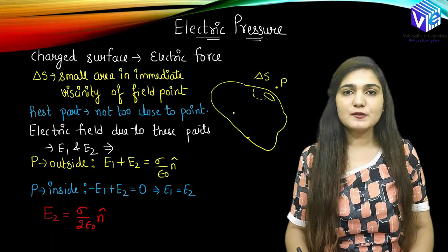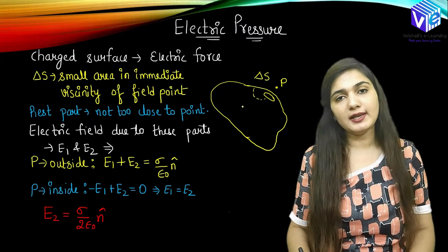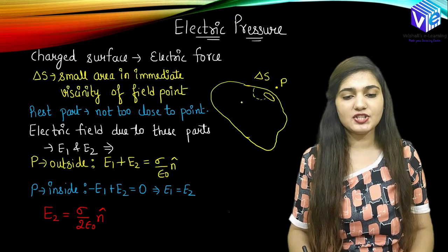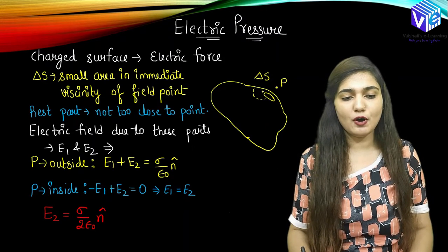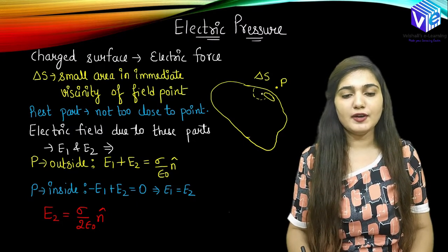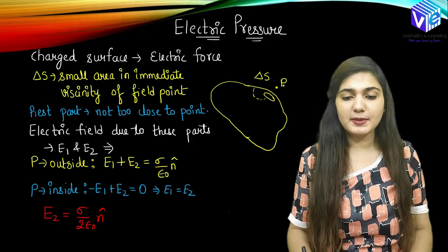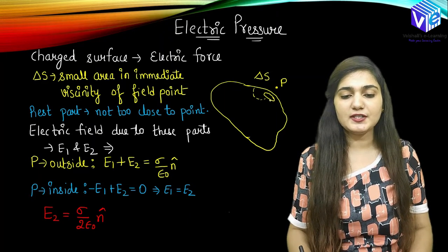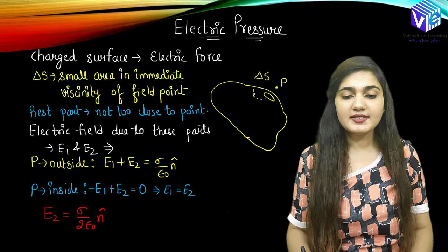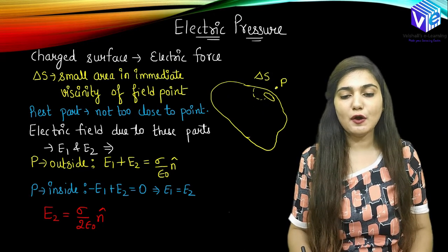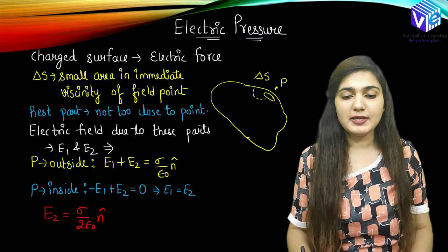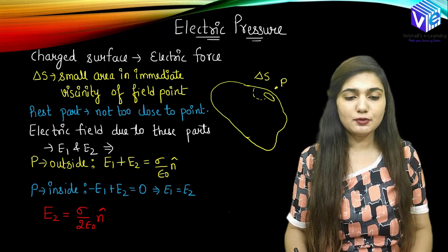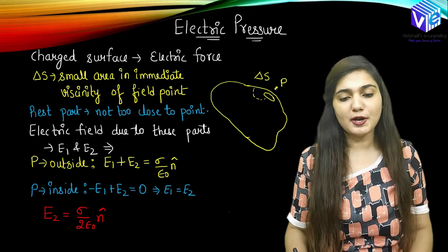We all know what pressure is — pressure is force per unit area. Similarly, we can find out the electric force and electric force per unit area. Now here you can see we have a charged surface. I have taken a very small area in the immediate vicinity of the field point P. I have taken an outside point P from this surface, and I have taken a very small surface in the immediate vicinity of this point P on this surface.